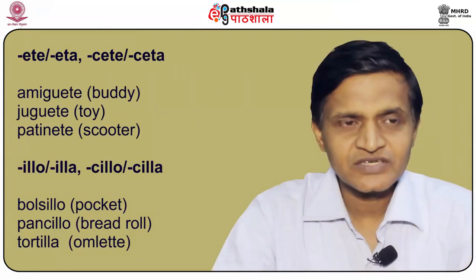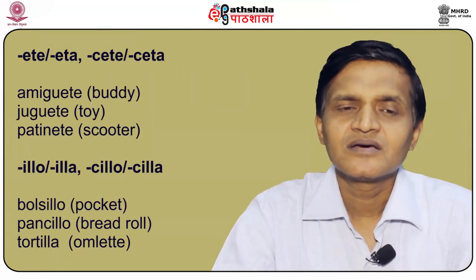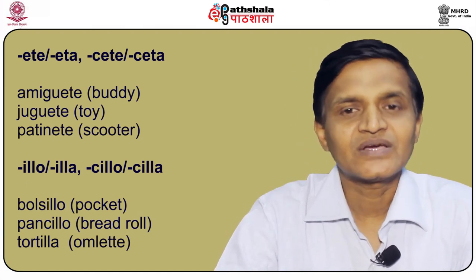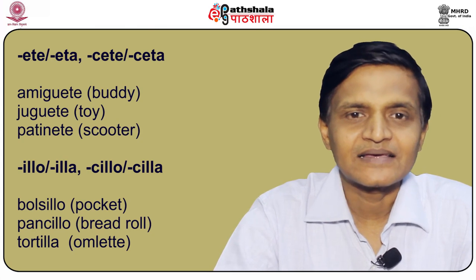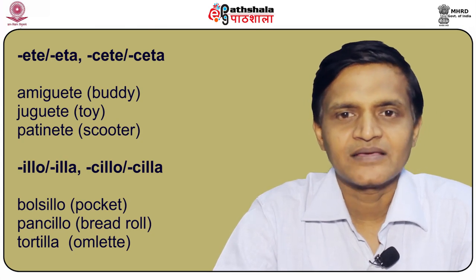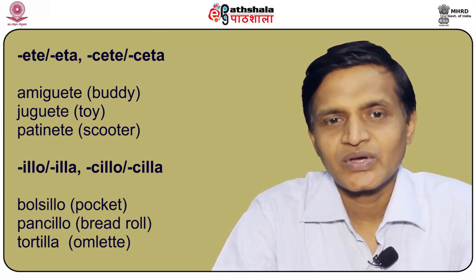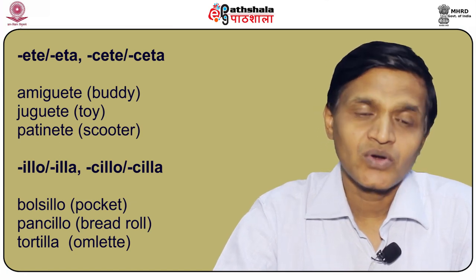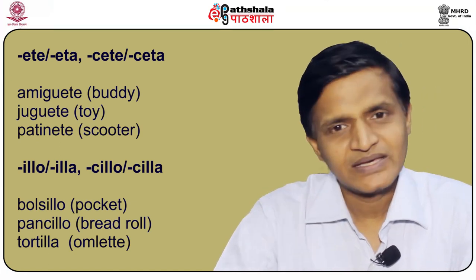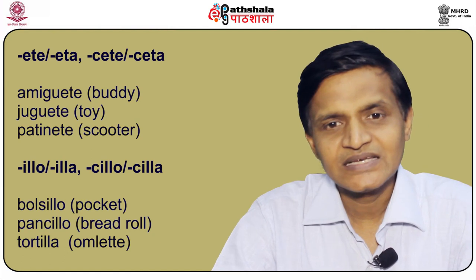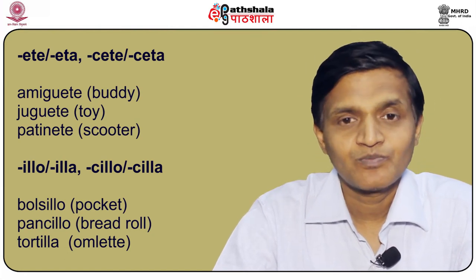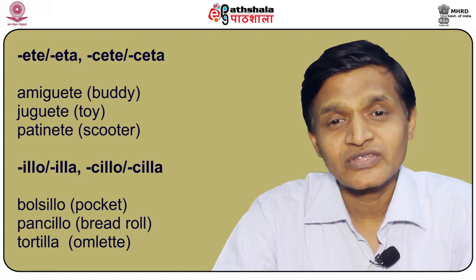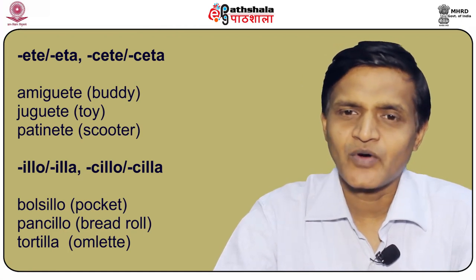Some other common diminutive endings include: -ete or -eta, and -sete or -seta — for example, amigete (buddy), juguete (toy), patinete (scooter). Also -ilio and -ilia, -silio and -silia — for example, bolsilio (pocket), pancilio (bread roll), tortilla (a small little omelette).